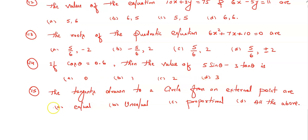Question number fifteen: the tangents drawn to a circle from an external point are: equal, unequal, proportional, or all the above. You have to select the correct option.